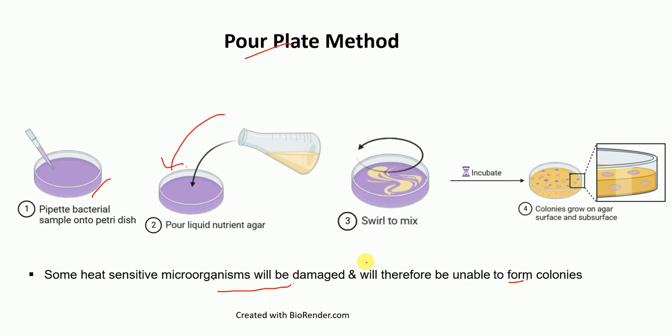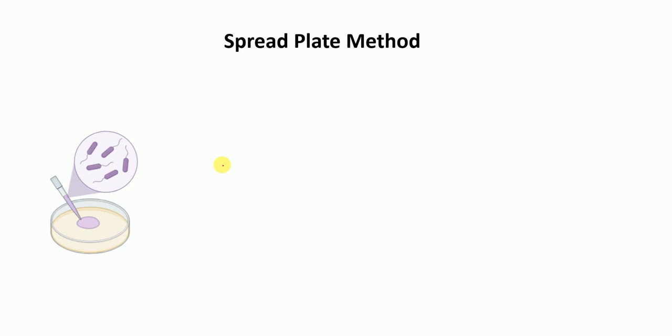The next method to prepare the plate is called the spread plate method. In this method, we take the bacteria and we place it on the plate containing solidified agar medium. We pipette the bacteria onto the plate, and this plate already contains the solidified media.